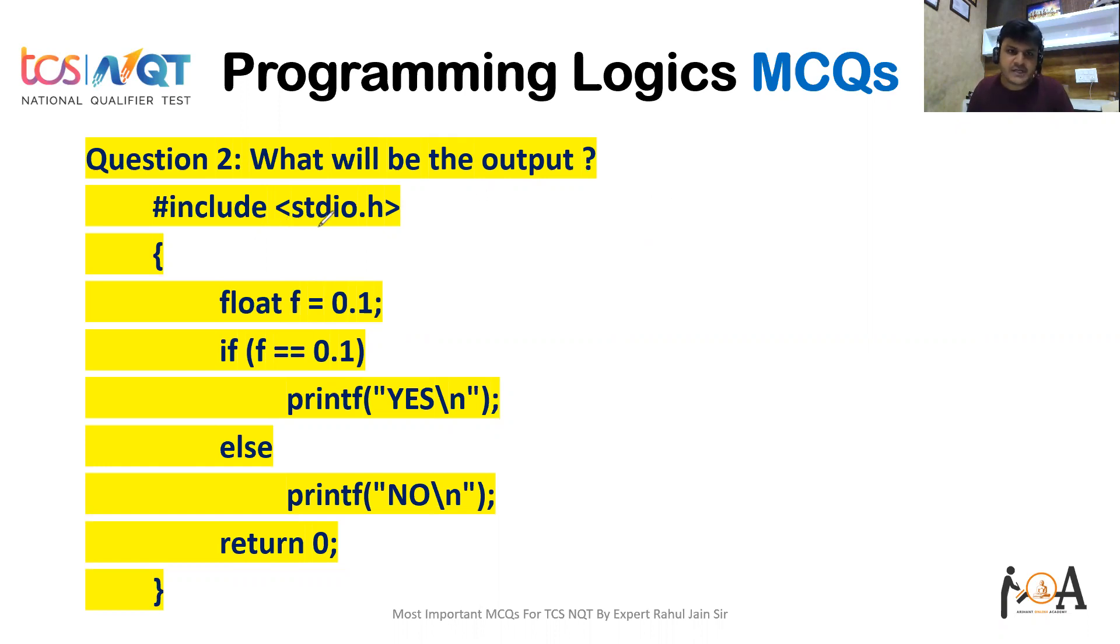The program is #include <stdio.h>, float f = 0.1 and then semicolon, if f == 0.1 print YES else print NO.